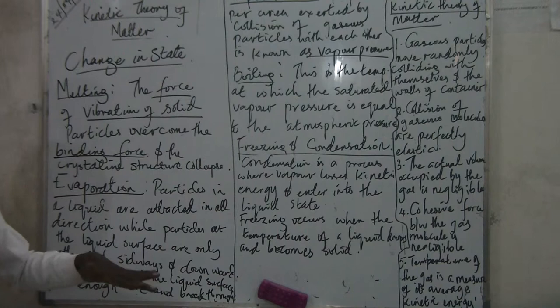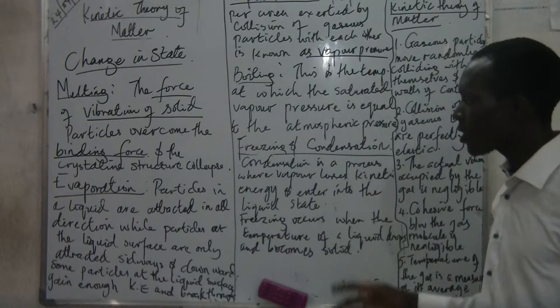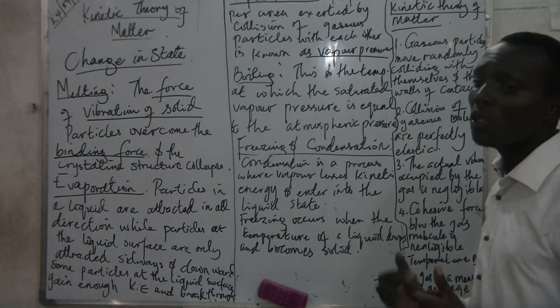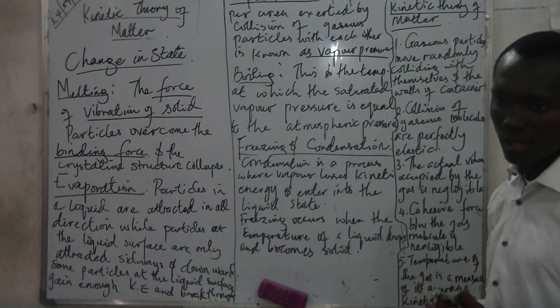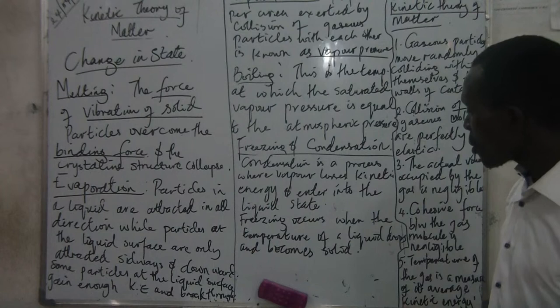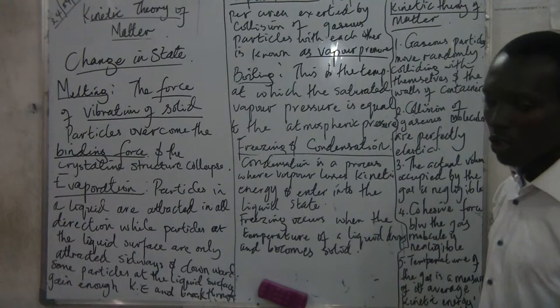Condensation is the process where vapor loses kinetic energy and enters the liquid state. When the vapor loses enough kinetic energy, it is forced to go to the liquid state. For freezing, when the temperature is lost, the molecules lose their kinetic energy and are forced to go to the solid state.